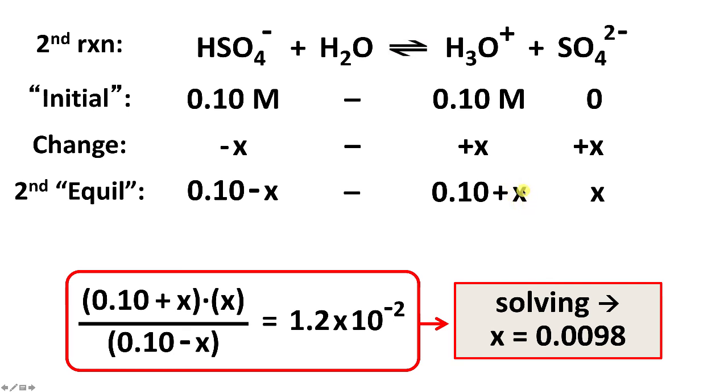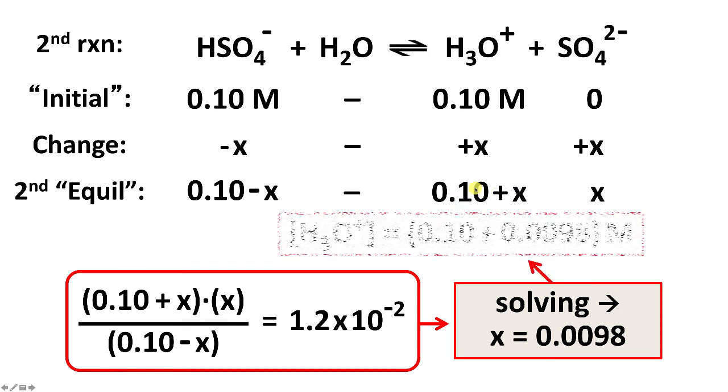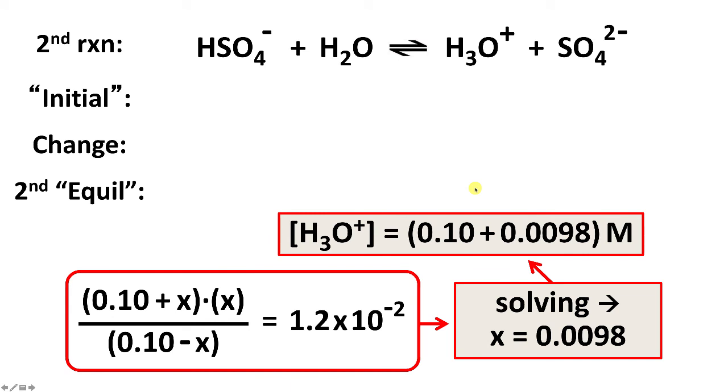It's the little bit more dissociation we get from the second step, which is added to the hydronium ion concentration from the first step. So that turns out to be 0.1 plus 0.0098, which rounds off to 0.11.